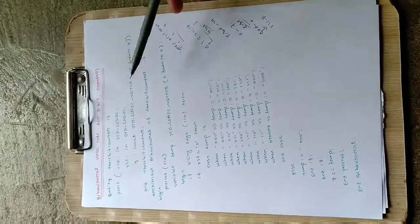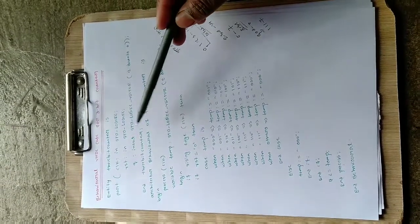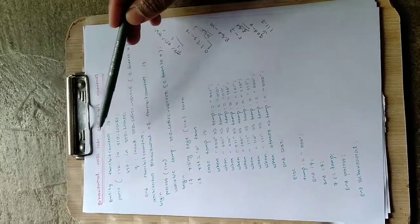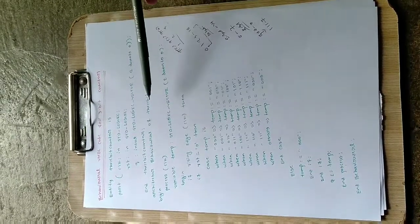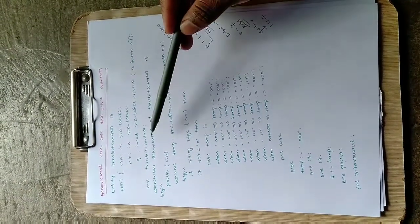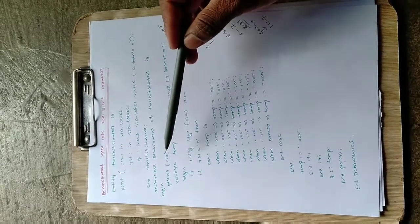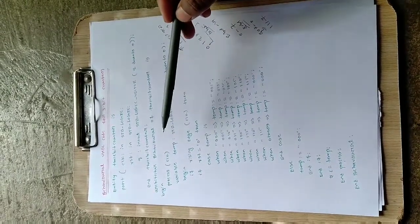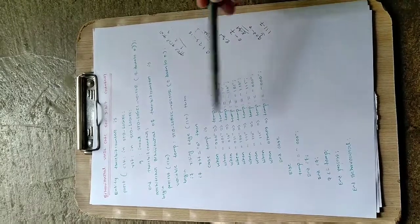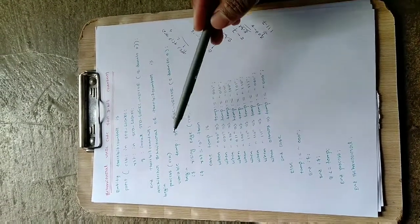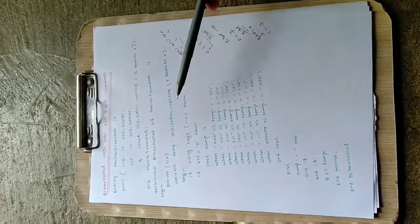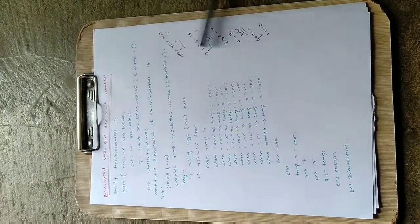Then 'end 3_bit_counter' closes the entity. Next is the standard architecture: 'architecture behavioral of 3_bit_counter' — make sure you use the same name as the entity. Then 'is', and for this architecture behavioral we declare a variable. This temporary variable 'temp' is used to calculate intermediate values, and at the end the temp value will be assigned to the output Q. It is also standard logic vector 2 down to 0, the same length as Q.